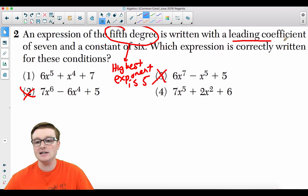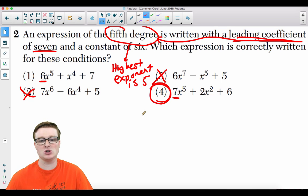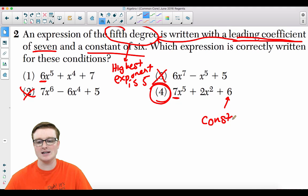Now, the leading coefficient is actually attached to the fifth degree exponent. So the leading coefficient is seven. The leading coefficient of this is six. The leading coefficient of this is seven. So your answer is going to be choice four. And just to make sure it has a constant of six, constant means it's just a number by itself. So that is your constant. Your answer is choice four.